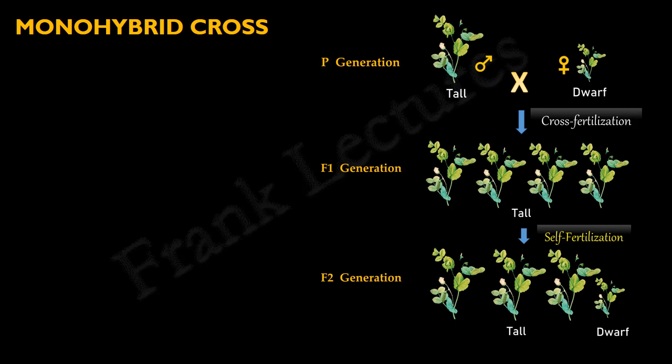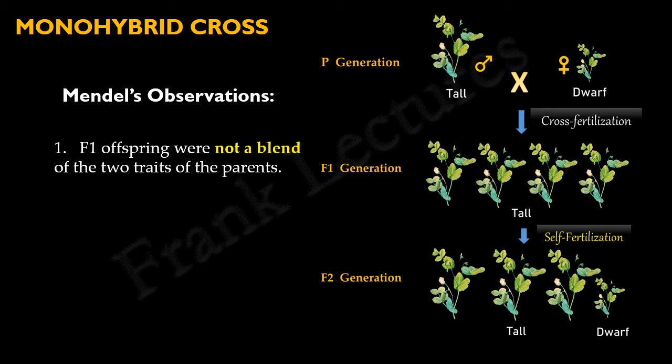Mendel observed two things. First, the F1 offspring were not a blend of the two traits of the parents — only one of the two traits was present in the offspring. For example, all plants were tall. Second, the other trait did not disappear or vanish; it appeared in the F2 generation. For example, the dwarf plant appeared in the F2 generation.